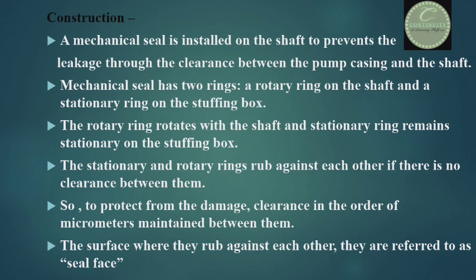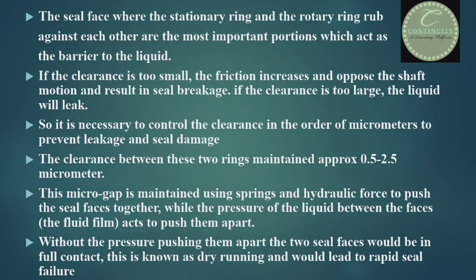The rotary ring rotates with the shaft while the stationary ring remains stationary on the stuffing box. If there is no clearance between them, they rub against each other and damage themselves. So to protect from damage, a clearance is maintained between them in the order of micrometers.